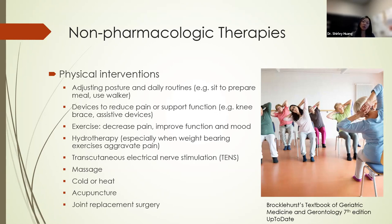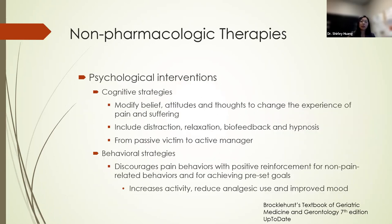Some people might need surgical intervention, such as joint replacement surgery for severe debilitating arthritis of the knee and hips, though surgery is more invasive and used as a last measure. Since the pain experience includes psychological factors, emotional suffering, and pain behaviors, psychological interventions should also be considered. Studies show cognitive strategies can decrease the amount of emotional suffering from pain, helping a person move from being a passive victim to an active manager of their pain.